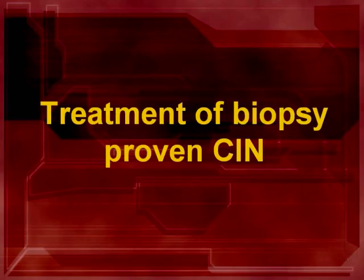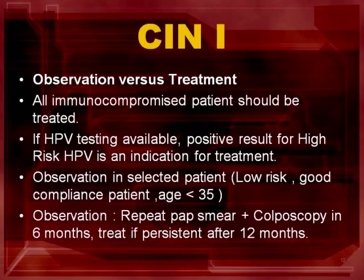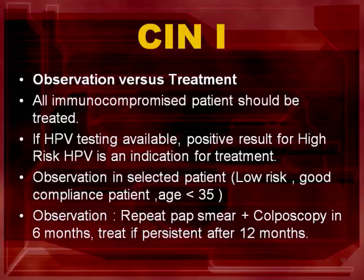The next video clip will show you how to manage CIN. As mentioned, CIN diagnosis is based on histology, not cytology. CIN1 can be managed either by observation or by offering treatment. All immunocompromised patients must be treated. All other high-risk women — such as smokers, sex workers, those with multiple sexual partners, a family history of gynaecological cancer, age more than 35, or positive high-risk HPV — should also be treated. In selected low-risk patients, especially those with good compliance and younger than 35, conservative management may be suitable. Women managed conservatively must be followed up closely every 6 months with colposcopy and Pap smear.